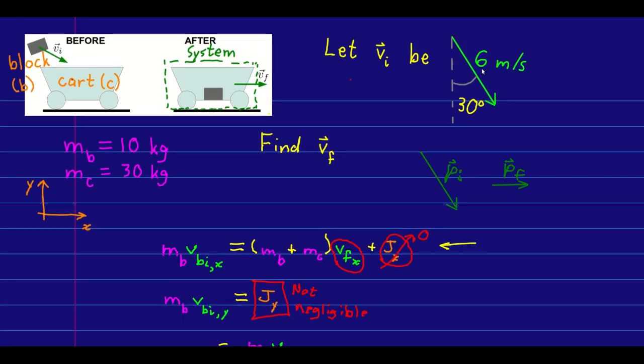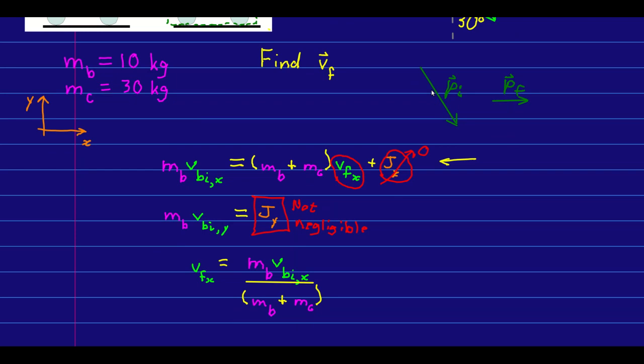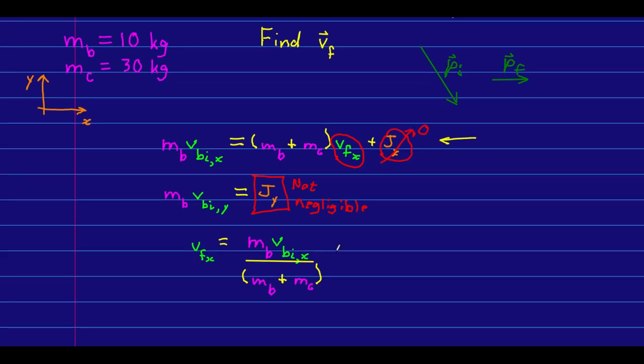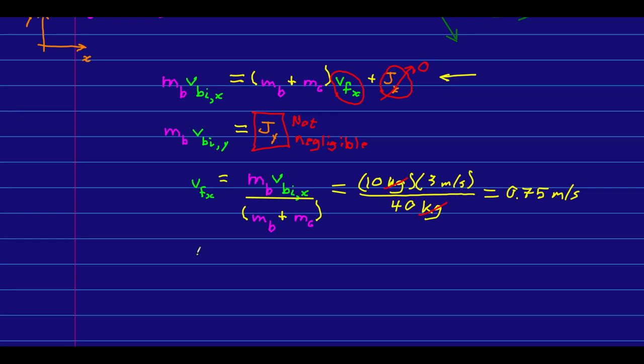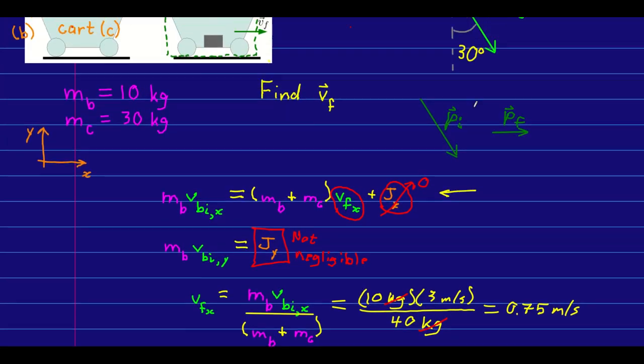Now the only thing left to do is put in numbers and get a final answer. Hopefully you can do the trig and see that the x component of the block's initial velocity is three meters per second. And so in the end, what we have is this. We can write the final velocity, and we expected it to be smaller than what we started with, and so this makes sense.